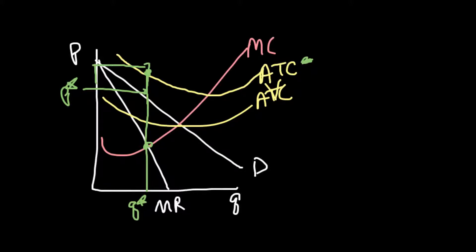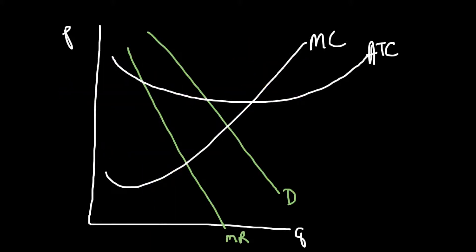Now we want to look at what happens to this industry in the long run — specifically for a monopolistic competition firm that is actually making a profit. Ease of entry is high, so what happens in the long run? We're starting at a short-run picture of a firm making a profit. We have MR equals MC, take that up to the demand curve: here's Q star, here's P star. At Q star, average total cost is below P star — price is greater than average total cost, so the firm is making a profit.